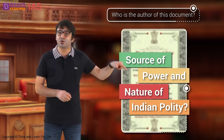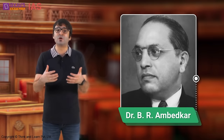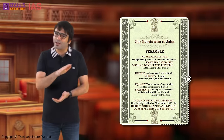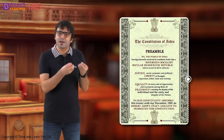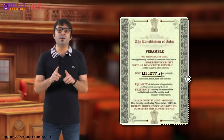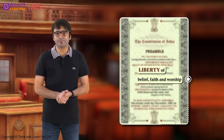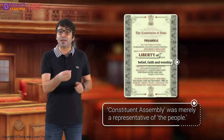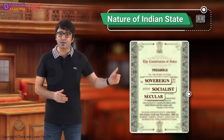Dr. Ambedkar said: 'The preamble embodies that this constitution has its root, its authority, its sovereignty from the people.' On this note, it is surprising to know that there were recommendations suggesting starting the constitution in the name of God, or Mahatma Gandhi, or a combination of both — but these were all negated on the grounds that the constitution was not a Gandhian constitution and the preamble promised liberty of belief, faith and worship. The text and tone of the preamble makes us acutely aware that the constituent assembly was merely a representative of the people. The nature of the Indian state is: sovereign, socialist, secular, democratic republic.